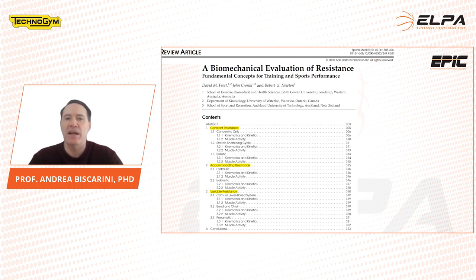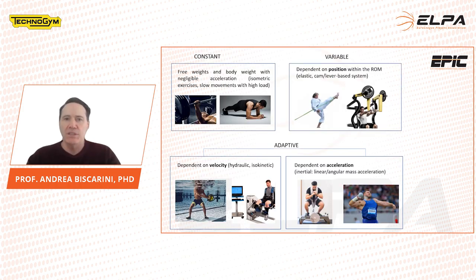The resistances used in strength training can be classified in three main categories: constant resistances, variable resistances, and adaptive resistances. Variable resistances depend on position, whereas adaptive resistances depend on the instantaneous value of the movement velocity or movement acceleration. The acceleration dependence is determined by the so-called inertial effects.